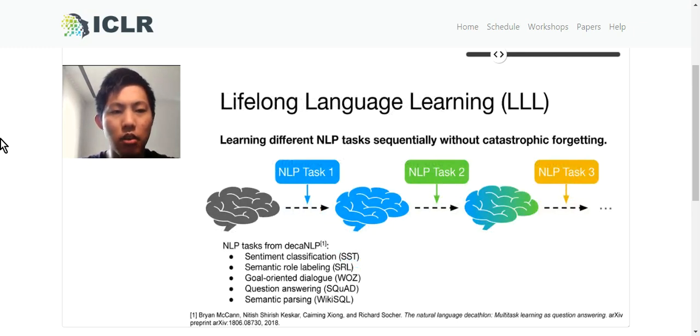In this work, we aim for lifelong language learning. We want our model to learn different NLP tasks sequentially without catastrophic forgetting. These NLP tasks include sentiment classification, semantic role labeling, goal-oriented dialogue, question answering, and semantic parsing.